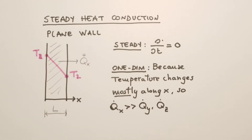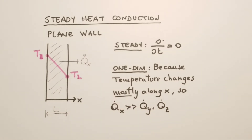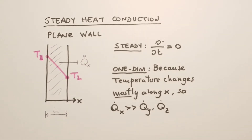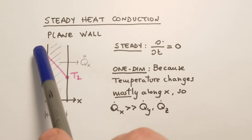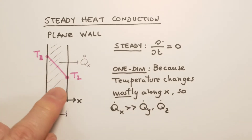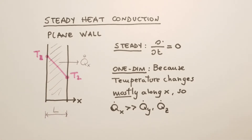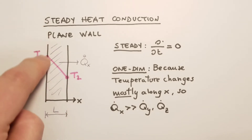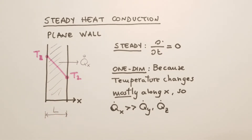Welcome to a new discussion of heat transfer. We're still talking about steady heat conduction, and today we focus more on the case of a plain wall. We consider a flat wall where the height is much larger than the thickness L. The left side has temperature T1 and the right side temperature T2. With no heat generation and a steady case, temperature does not change with time, and we assume the problem is one-dimensional because temperature changes occur along x much more than in y or z directions.